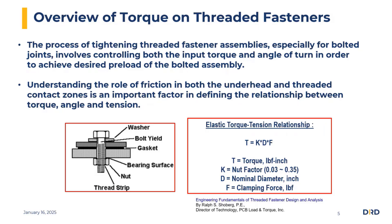Let me give a little overview of torque on threaded fasteners. The general process of tightening threaded fastener assemblies usually involves controlling both the input torque and the angle of turn in order to achieve the desired preload of the bolted assembly. There is an important and critical role of friction in evaluating the torque, and we need to consider both the underhead and the threaded contact zones when evaluating the total torque from the threaded assemblies.